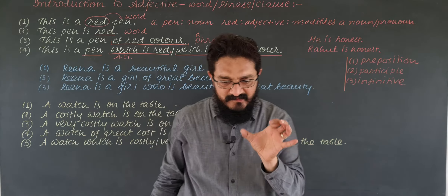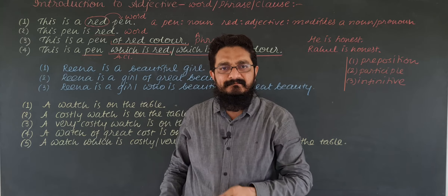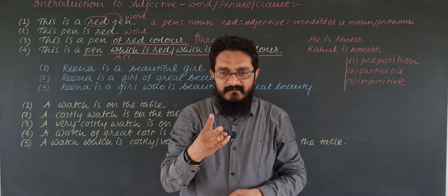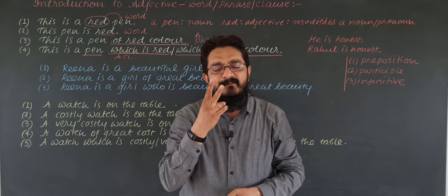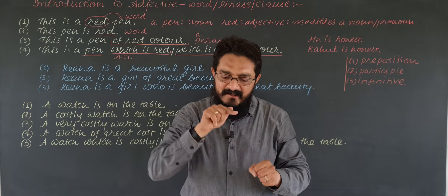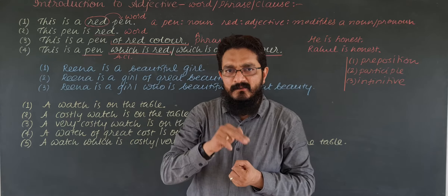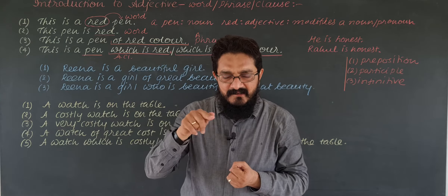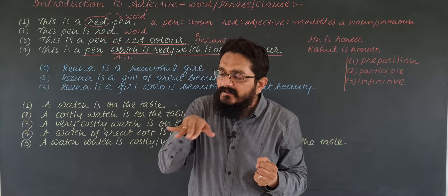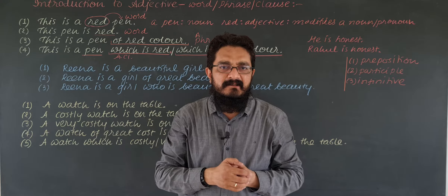What is an adjective? Adjective adds something to the meaning of a noun or a pronoun. What is adjective phrase? A phrase that modifies a noun or pronoun — a phrase that adds something to the meaning of a noun. What is adjective clause? A clause that modifies a noun or pronoun — a clause that adds something to the meaning of a noun is called adjective clause.